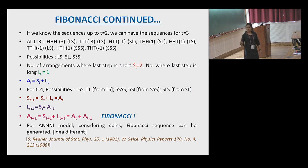This Fibonacci sequence is observed in case of spin systems, interacting spin systems, where there are different kinds of competing interactions. In any model, you can have this kind of Fibonacci. But the idea was a bit different there.